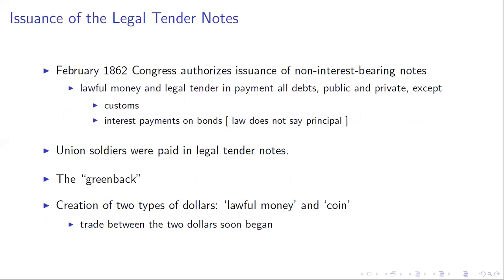They authorize issues of non-interest-bearing notes, called lawful money — legal tender in payment of all debts, public and private, except customs revenue and interest on the bonds. Union soldiers are going to be paid in these legal tender notes, the greenback.